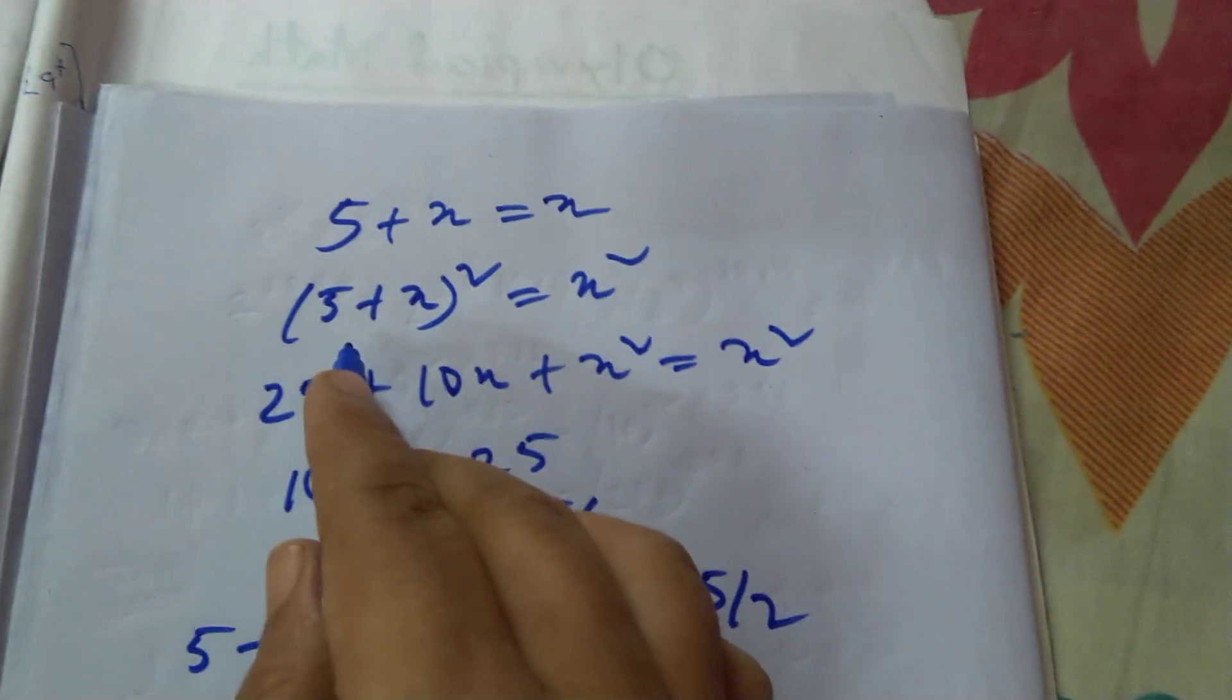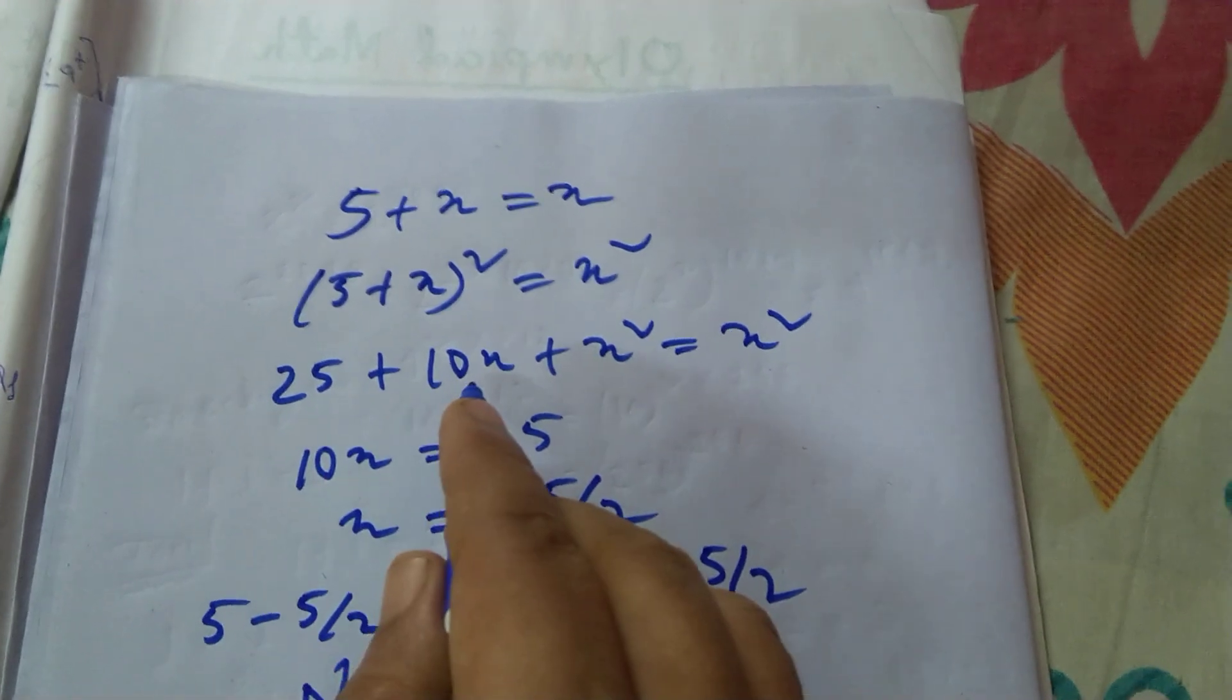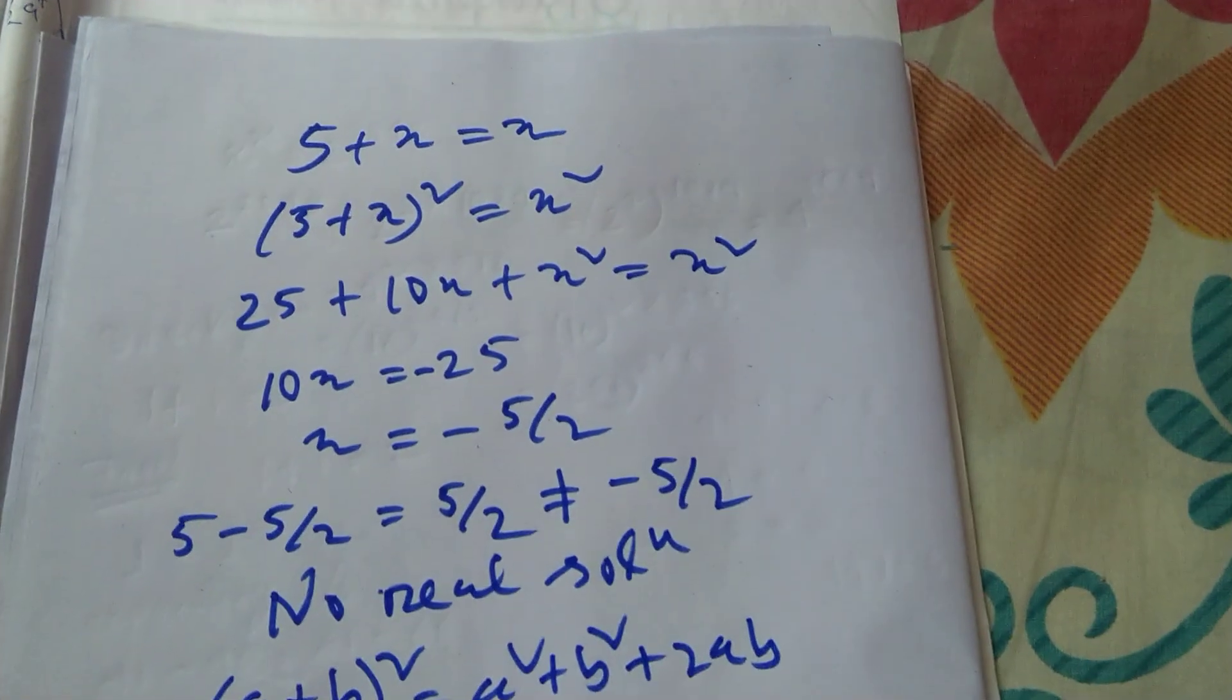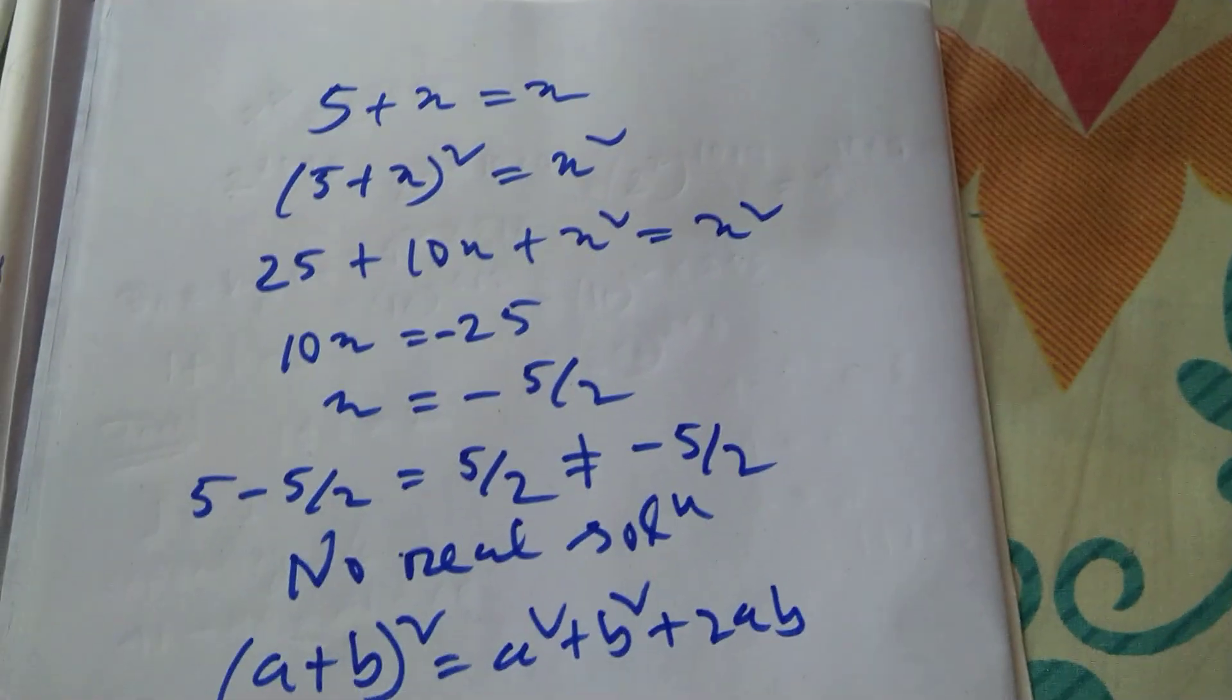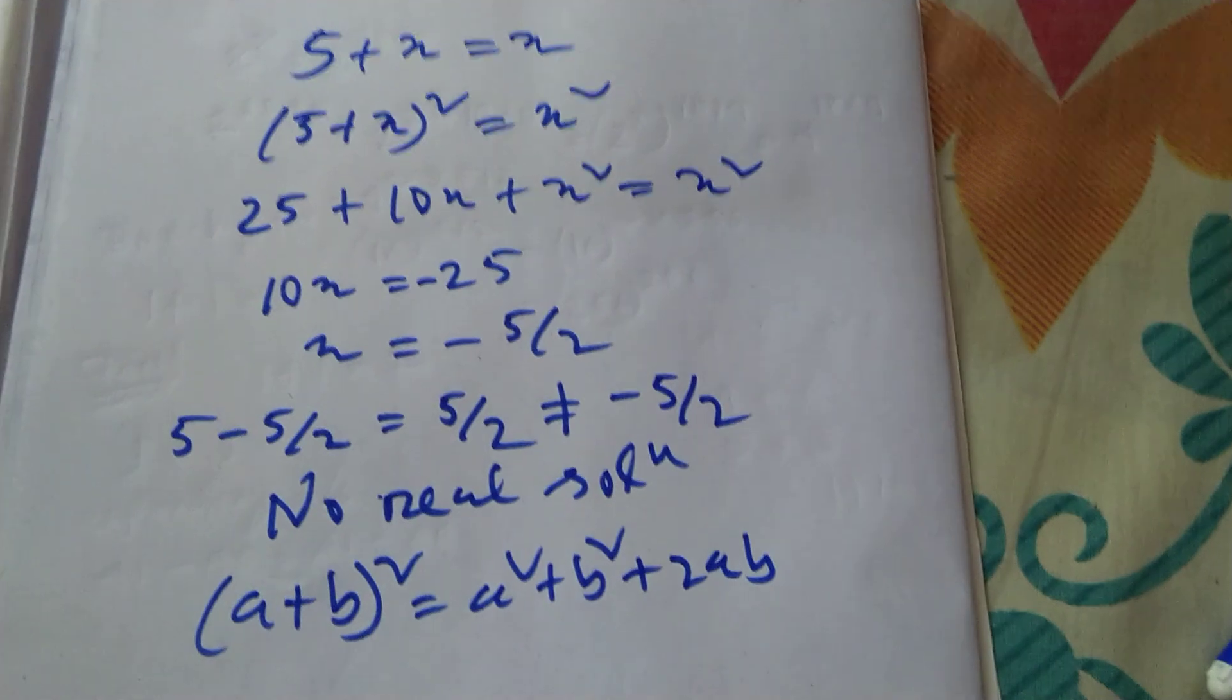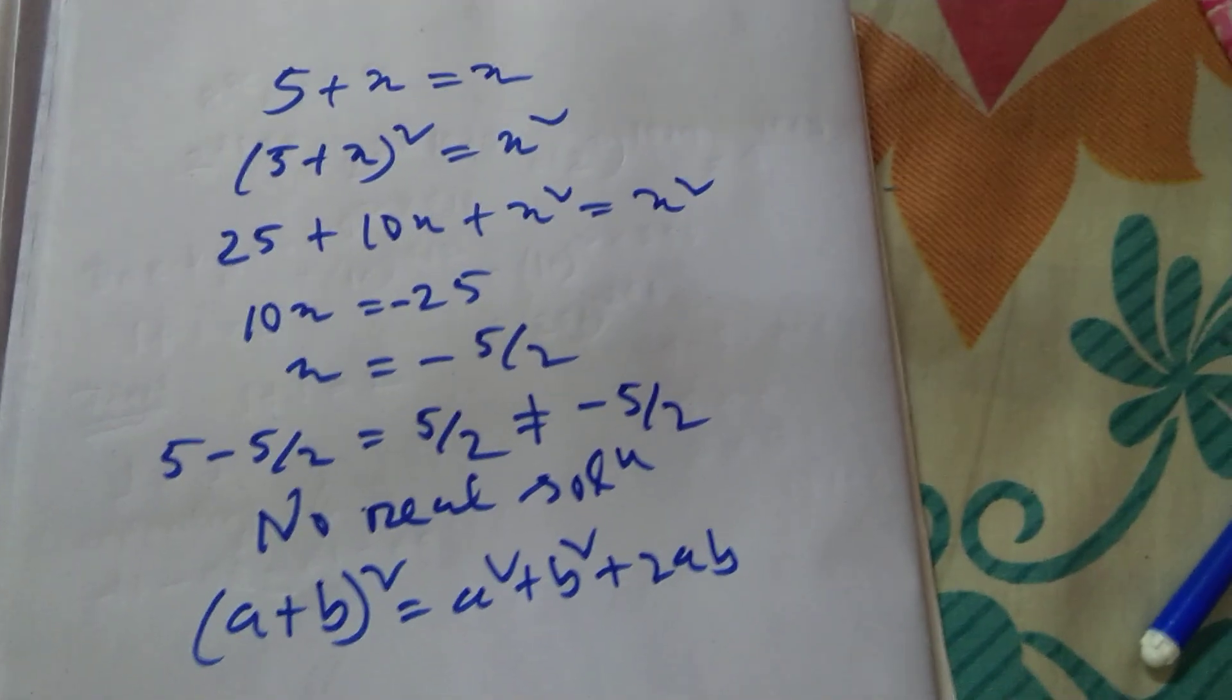5² = 25, 5 into 2 is 10x, plus x². Squaring both sides, I am just squaring both sides. Please check my total solution. If any confusion, please comment.